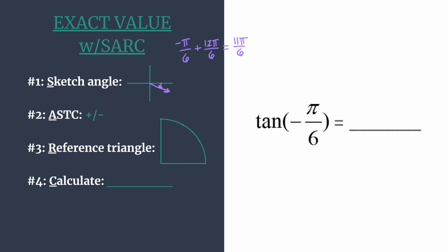The angle 11π over 6 is coterminal to negative π over 6. So the tangent of 11π over 6 gives the same answer as tangent of negative π over 6. Back to our sketch.